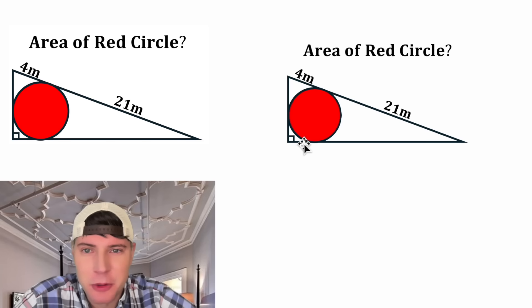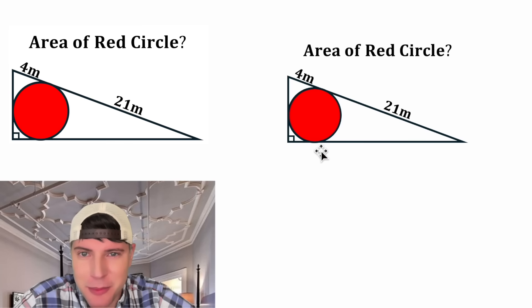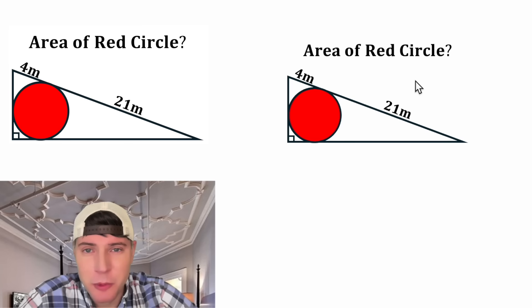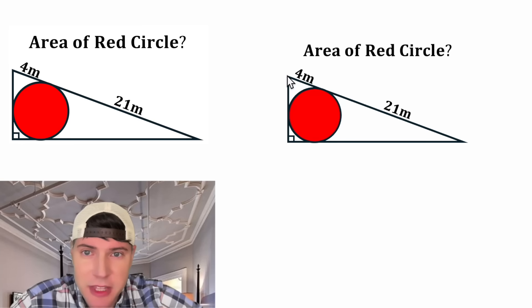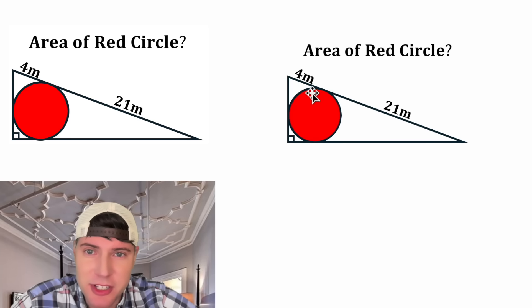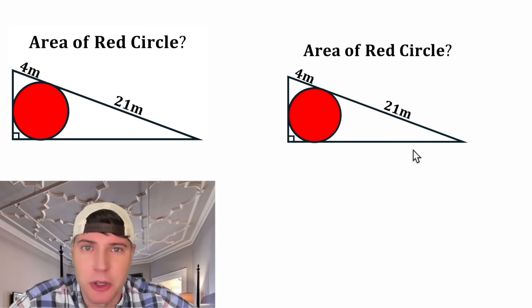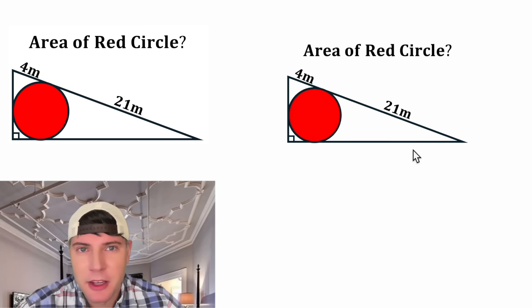Hey guys, this looks like a fun one. We're given a right triangle with an inscribed circle, and it wants to know what is the area of the red circle. We're also given that this portion of the hypotenuse is equal to four meters, and this portion is equal to 21 meters.